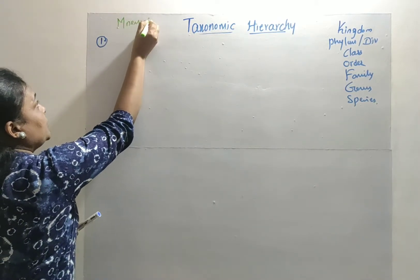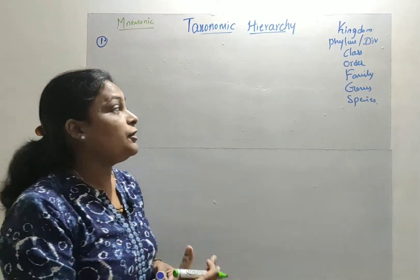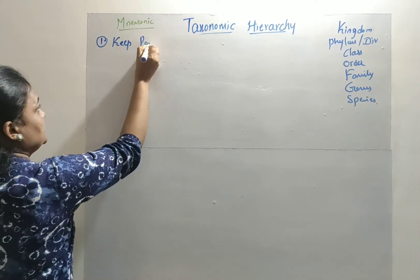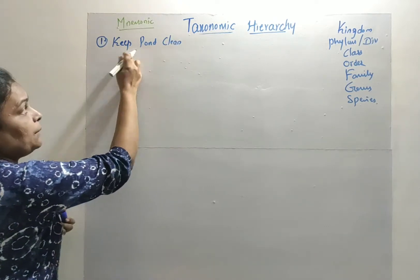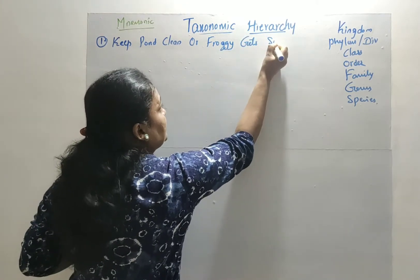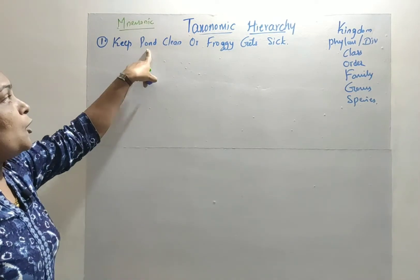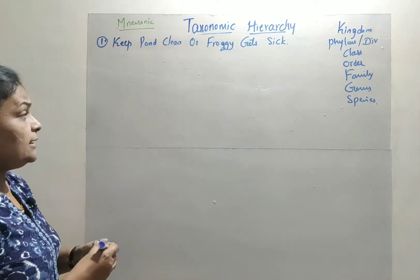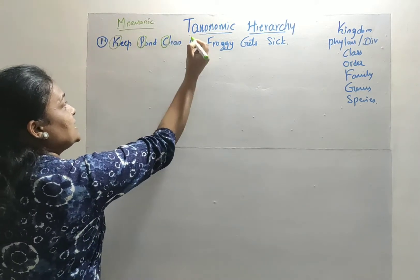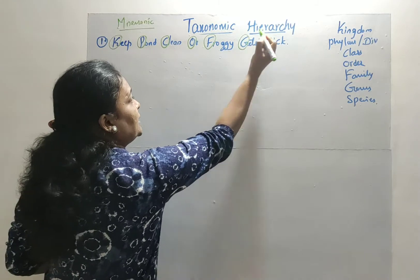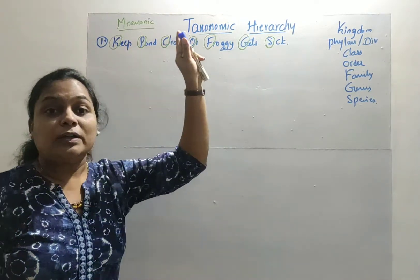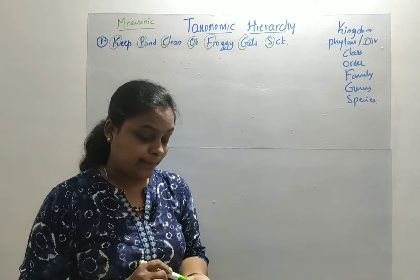Mnemonics are memory tools we use to remember certain things. The first mnemonic is: 'Keep Pond Clean Or Froggy Gets Sick.' In this mnemonic, K stands for Kingdom, P for Phylum, C for Class, O for Order, F for Family, G for Genus, and S for Species.